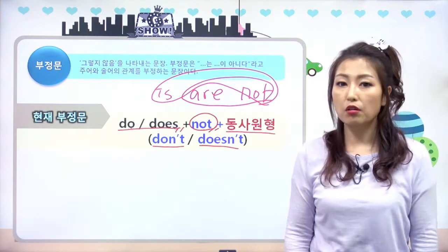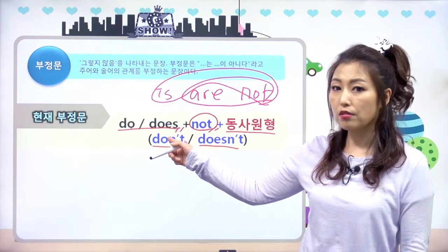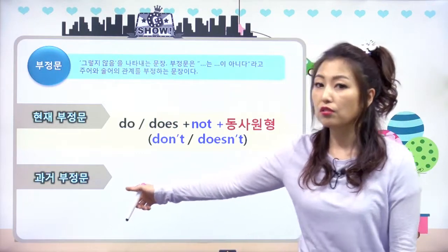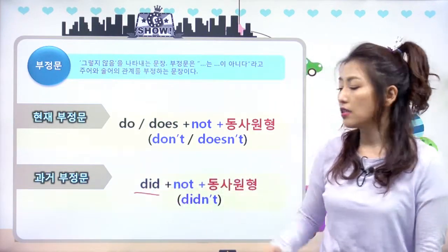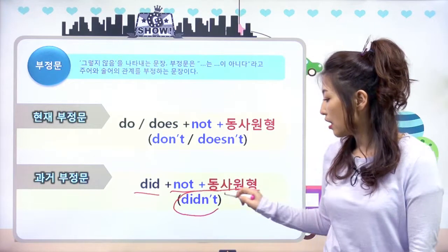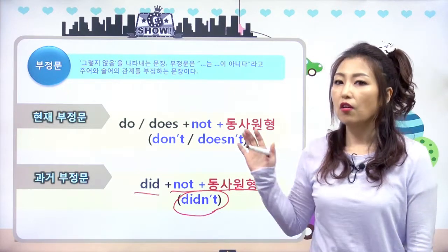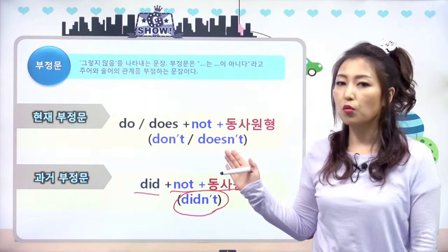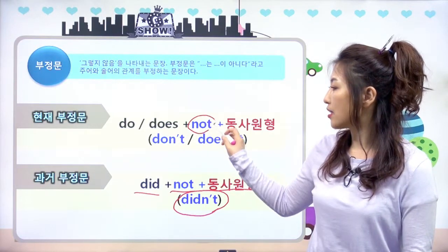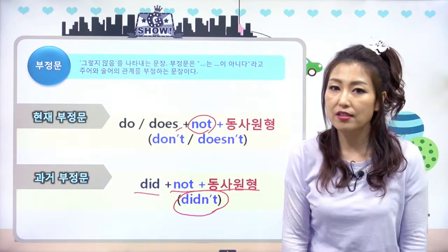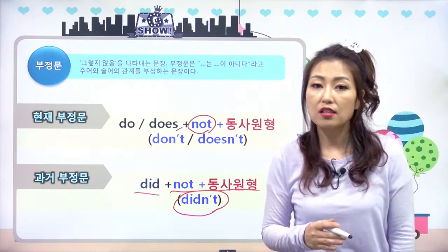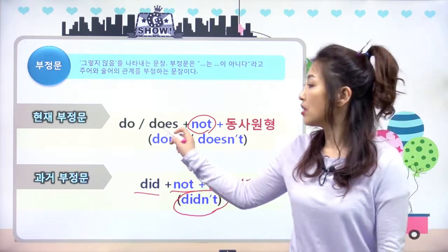그러면 do, does의 과거형은 뭐라고 했어요? did라고 했었죠. 과거 부정문은 똑같이 did가 오고 not을 붙이고 동사 원형이 되는 거예요. didn't가 되는 거죠. 앞에서 부정의 not이 붙는 부분을 do, does가 다 해결했으니 뒤에 동사에는 주어가 어떤 인칭이든 상관없이 다 여기서 해결이 됐잖아요.